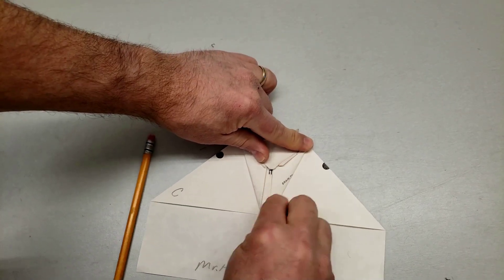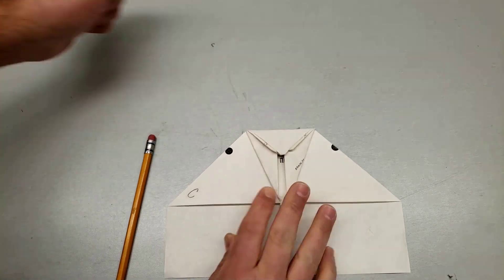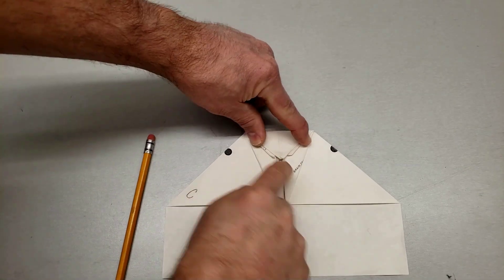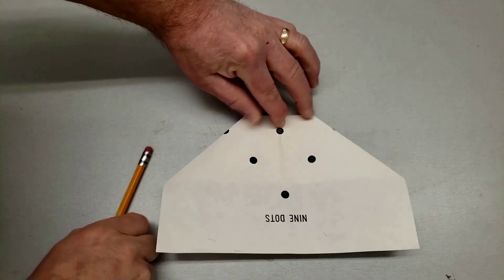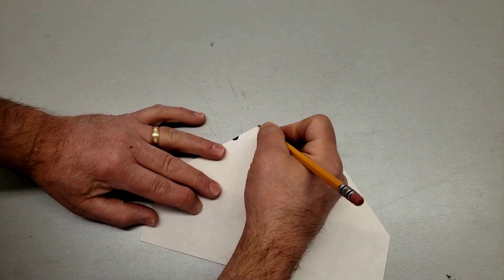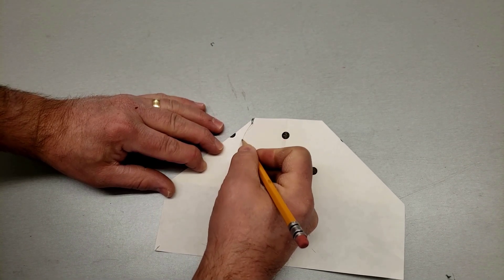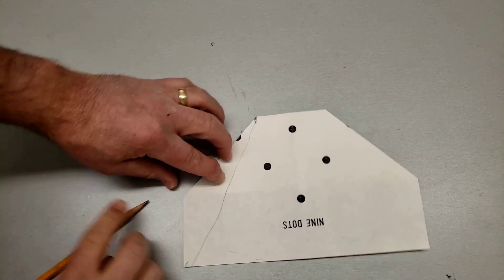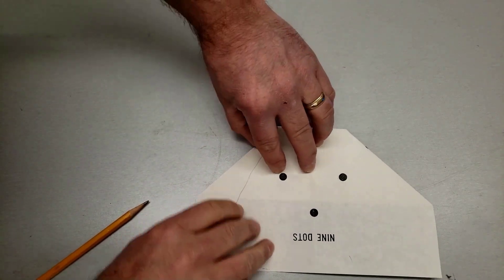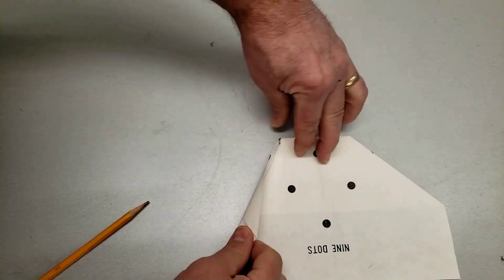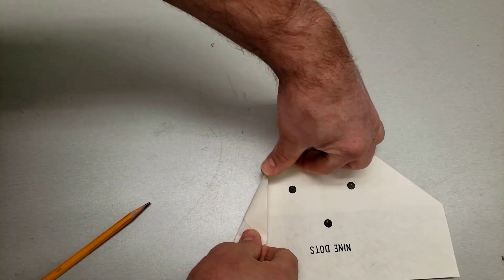And with it all tucked in, flip it over. Mark this corner right here to this corner right here and that is the line you're gonna fold over. Now that's crooked because I didn't use a ruler. If you've got a ruler that is a great idea but I'm just gonna go from point to point.